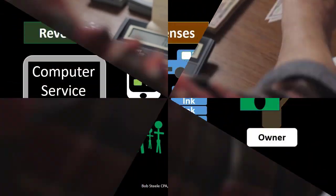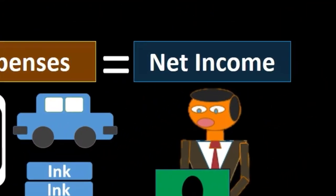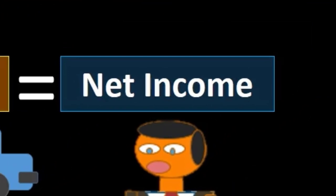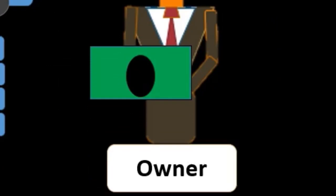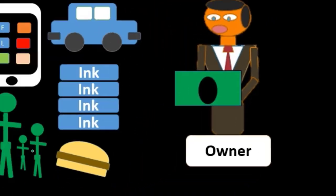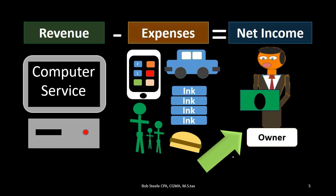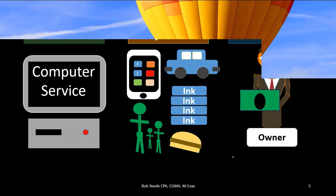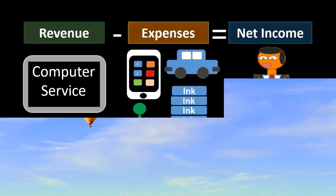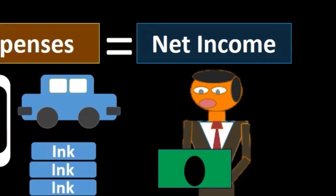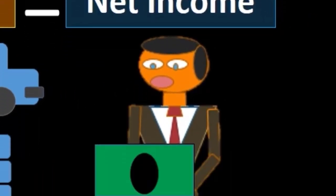Net income is part of the equity section, so we can think of it as increasing equity — increasing the amount going to the owner or owners. For a sole proprietor or partnership, net income increases what is allocated to the owner or partners. For a corporation, net income increases what is allocated to the shareholders.